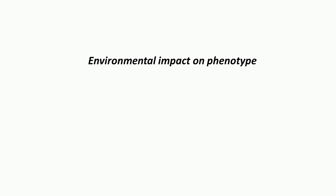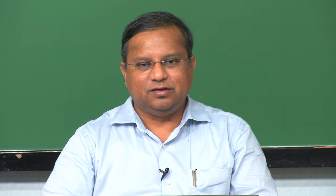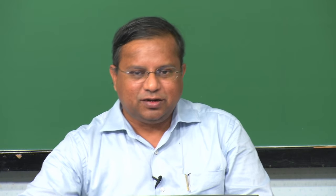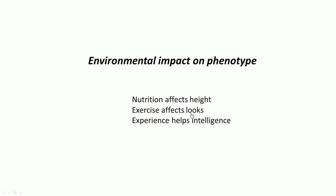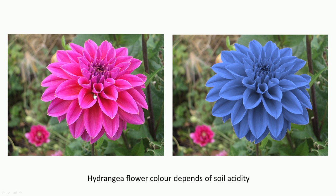The last thing we are going to see is that the environment could have an impact on the phenotype — not just the gene. The environment in which the gene is expressed could have an impact. For example, nutrition affects height; you may have the genetic potential, but whether you grow to that height depends on nutrition. Exercise affects looks. Experience helps intelligence. A pictorial example is the color of a hydrangea flower — it could be one color or another depending on the acidity level of the soil. It is the same gene, but which color is expressed is determined by the environmental condition.